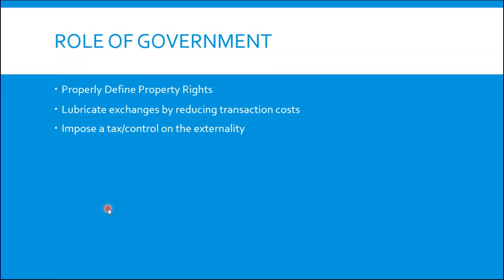Finally, if a government can't properly define rights and can't reduce transaction costs far enough, they can impose a tax or a control on the externality — a carbon tax on carbon emissions, for example. By increasing the price, they attempt to reduce quantity supplied and quantity demanded, and thus we get to an optimal level of production. The basic idea of externalities is that they are costs or benefits that fall on a third party. The main ways of overcoming these — of internalizing the costs — is by defining property rights and trying to reduce transaction costs. The next video will cover public goods and finish up market failure.